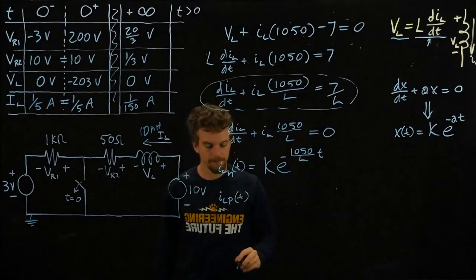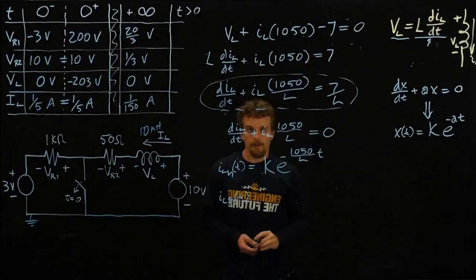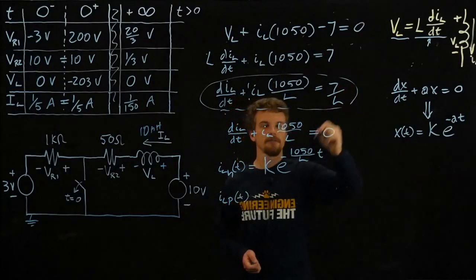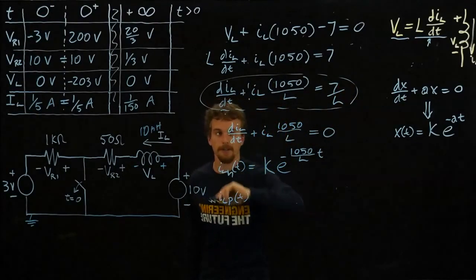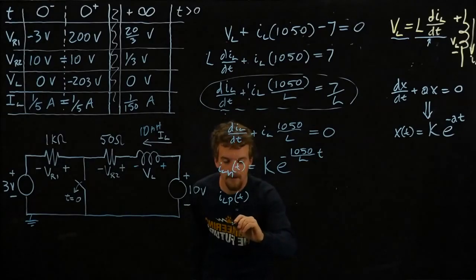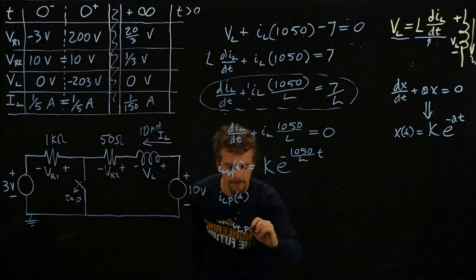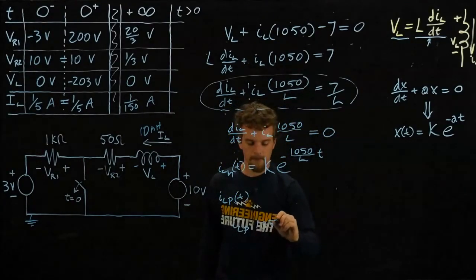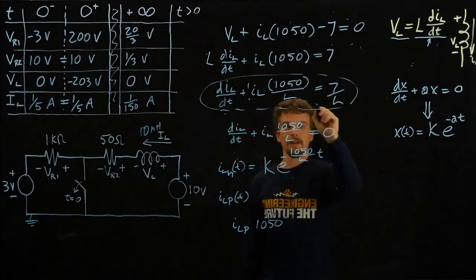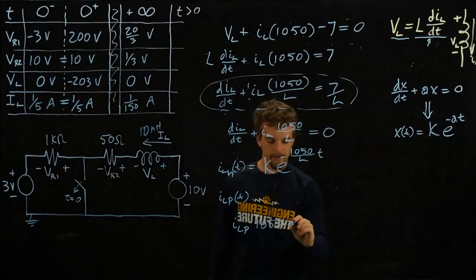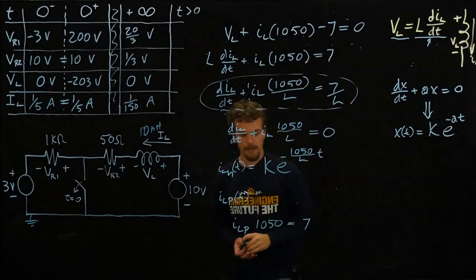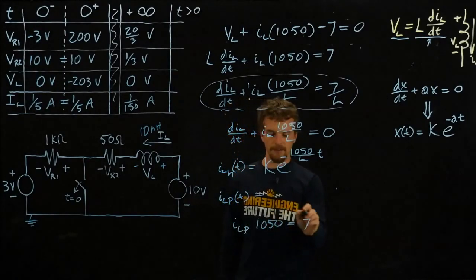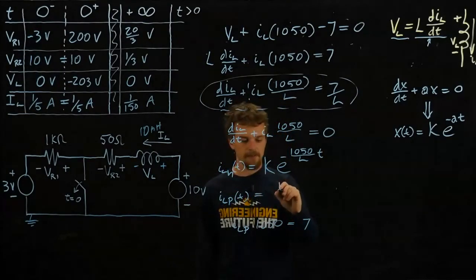We'll call this a particular value, ILP. So we want this part of the equation to be true still, but this constant goes to zero. So we want IL particular times 1050 to equal 7, and that gives us IL particular is 7 over 1050, that is equal to 1 over 150.